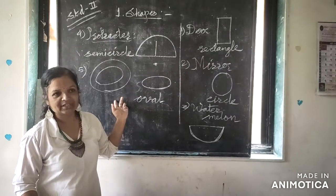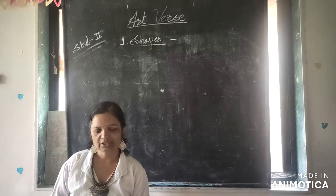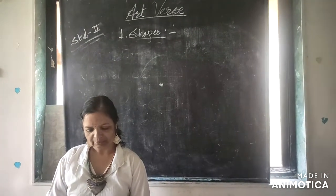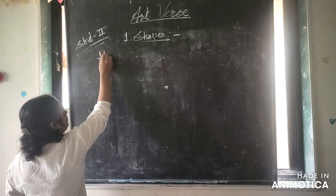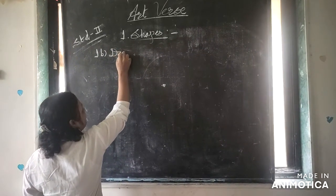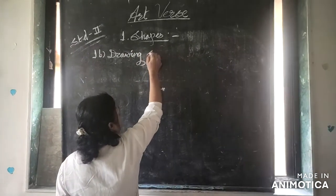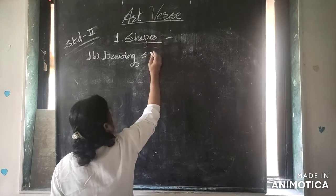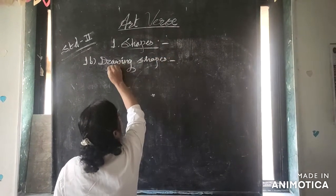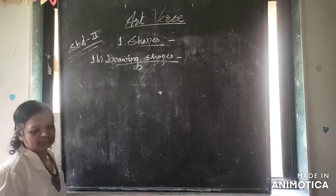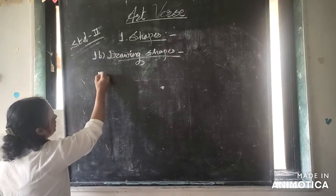In this way, we learn different types of shapes. Friends, come to the next page. Here we have 1B — Drawing shapes. We have to find out some cut-outs and take the cut-outs.